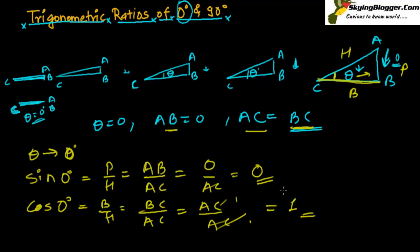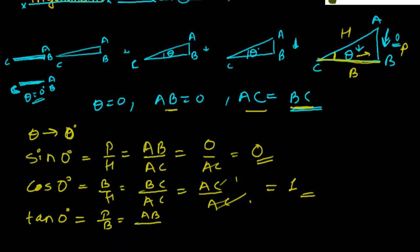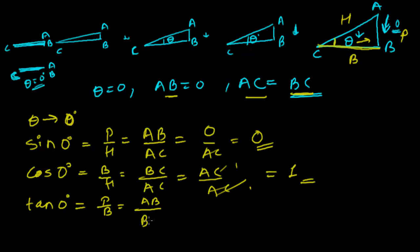Now let's find tan zero. Tan zero equals perpendicular upon base, that is P upon B. Perpendicular here is AB, and base is BC. AB is zero, so AB upon BC equals zero upon BC. Zero upon something is always zero. So tan zero degree equals zero.